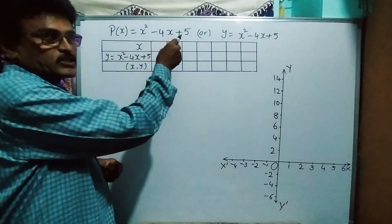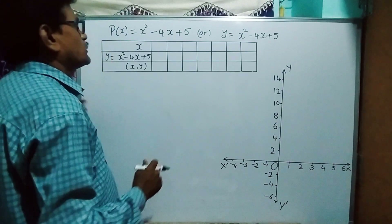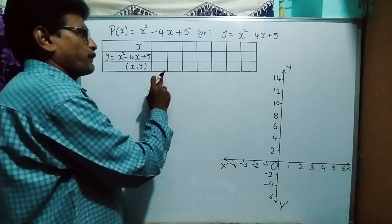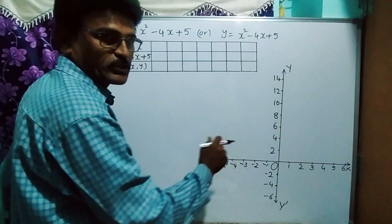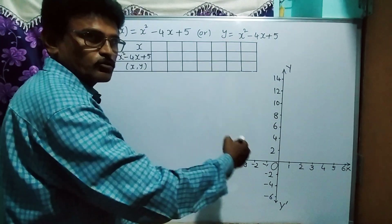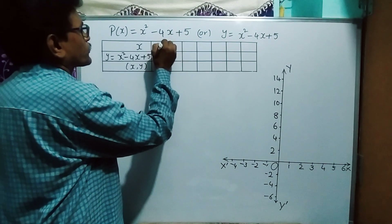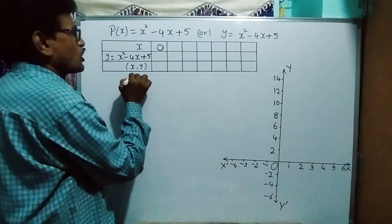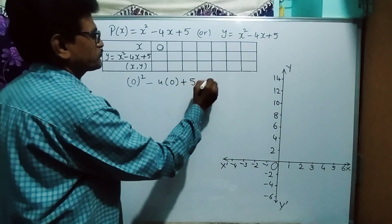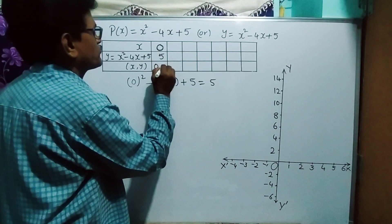Let's take the first example: the quadratic polynomial p(x) = x² - 4x + 5, which we can also write as y = x² - 4x + 5. First, we take some values of x, then calculate the corresponding y values. These x-y pairs will be plotted on the graph sheet. After choosing appropriate scales for the x-axis and y-axis and plotting the points, we join them freehand to get the parabola.